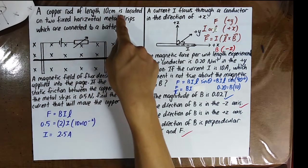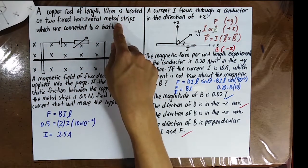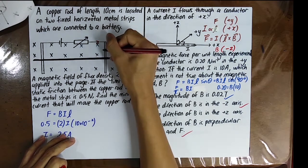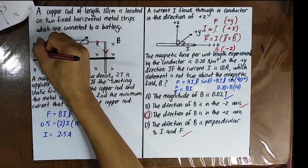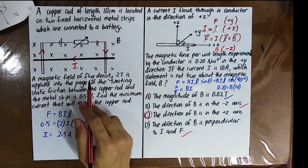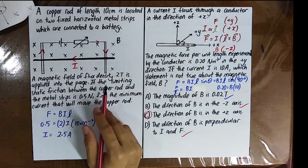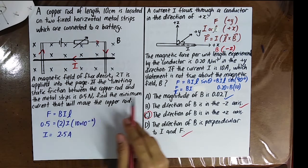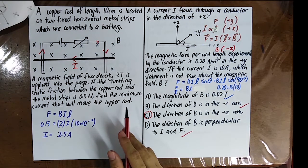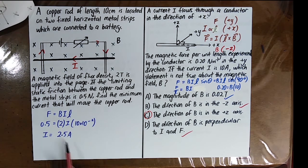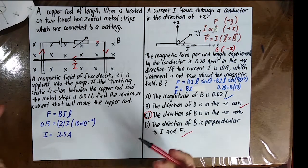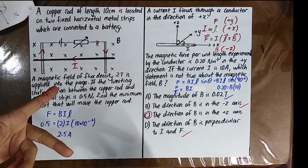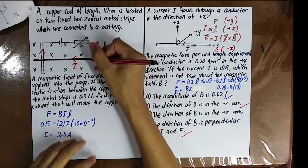Example: A copper rod of length 10 cm sits on two fixed horizontal metal strips connected to a battery. A magnetic field of flux density 2 tesla is applied into the page. The limiting static friction between the copper rod and the metal strips is 0.5 N. Using F = BIL, find the minimum current that will move the copper rod. Using Fleming's Left Hand Rule with B into the page and I in the given direction, you can determine the direction of the force on the rod.